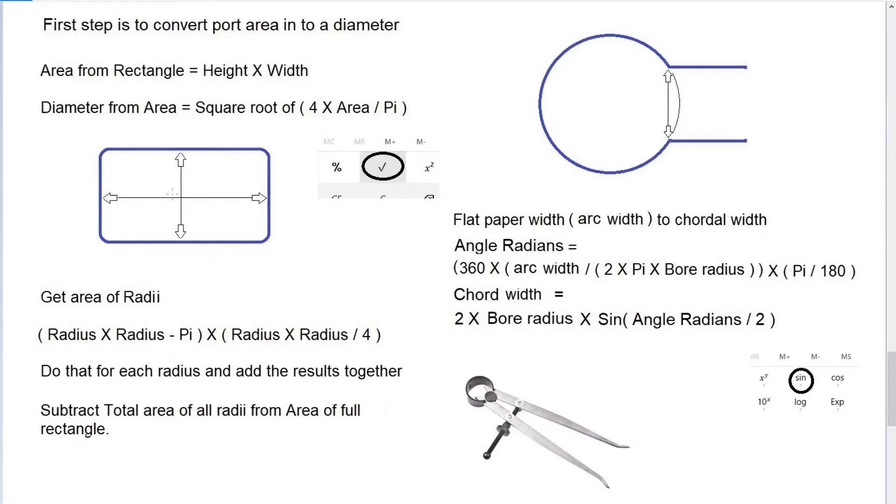Last one we went into basic measuring of the exhaust port area and the reason we do it and converting the arc width of a measurement that you've taken off paper into a chordal width. This one's going to get into the radii.